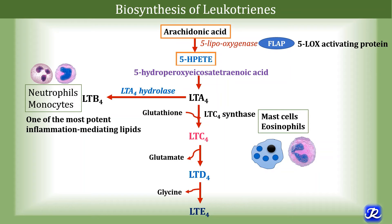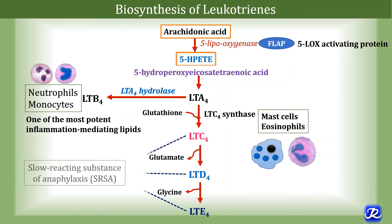So from leukotriene A4 there is formation of leukotriene B4, C4, D4 and E4. Leukotrienes C4, D4 and E4 are called slow-reacting substances of anaphylaxis.